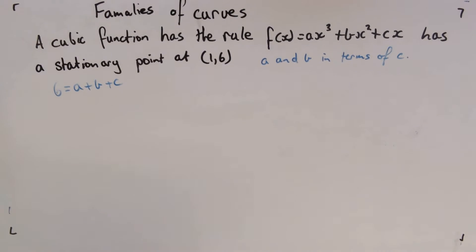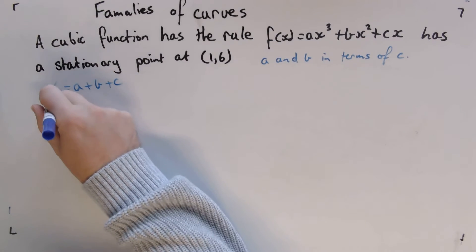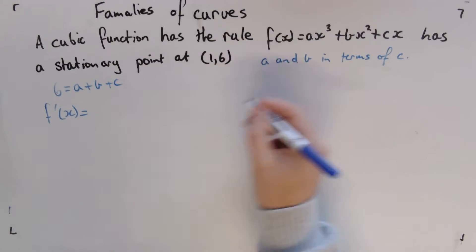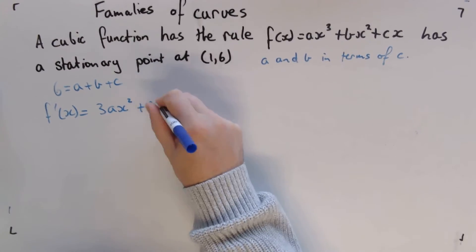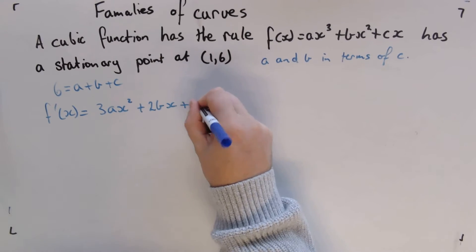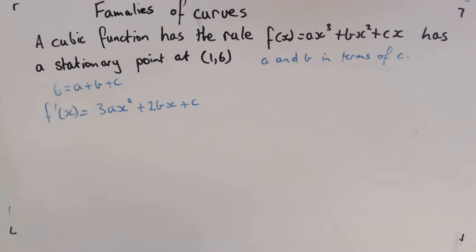But we also know that we have a stationary point there, so we need to look at taking the derivative. So we need to find f'(x), so that's equal to 3ax² + 2bx + c.